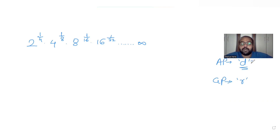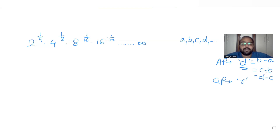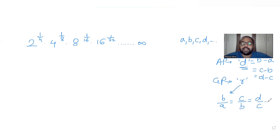If I want to explain arithmetic progression with terms a, b, c, d — the difference between b and a equals the difference between c and b, which also equals the difference between d and c. For geometric progression, the common ratio should be constant, so b/a equals c/b equals d/c, and so on.